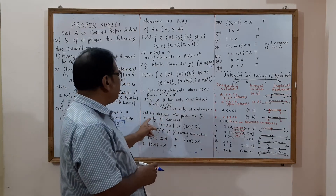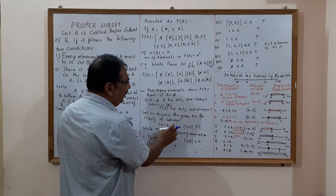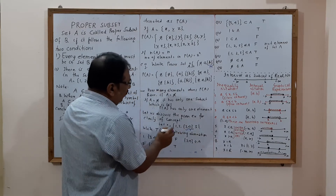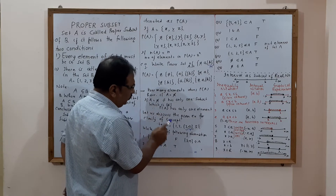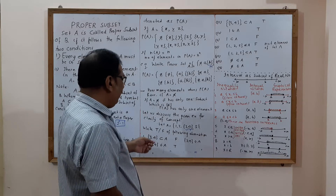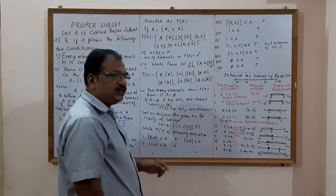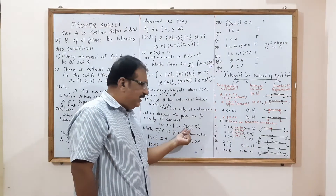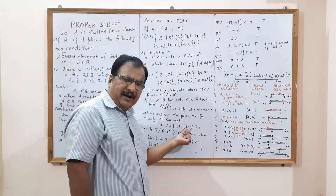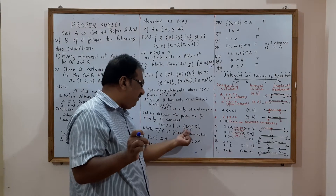Let us discuss a given example for clarity. Let A = {1, 2, {3,4}, 5}. This set has four elements: 1, 2, {3,4}, and 5. First question: is {3,4} a subset of A? This is false, because {3,4} is acting as an element of A — it belongs to A, it does not act as a subset of A.